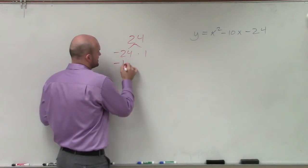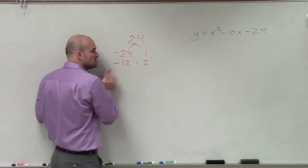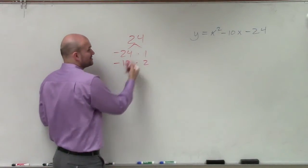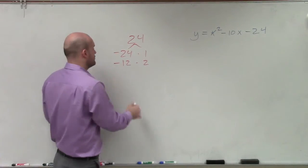The next factor I could do would be negative 12 times 2. Again, I'm always choosing the larger factor to be negative because I know the middle term is negative. And actually, you can see right here, negative 12 times 2, that ends up working.